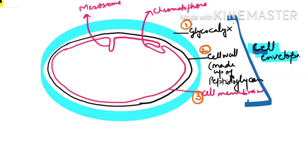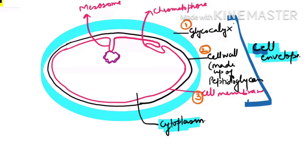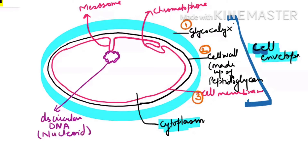Inside the cell envelope is the cytoplasm, which is the main area where all metabolic activities are performed. Inside the cytoplasm you find double-stranded (DS) circular DNA. It stays in a fixed position, and as a result we call that place the nucleoid.